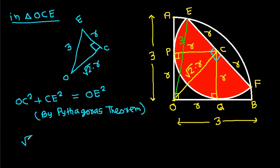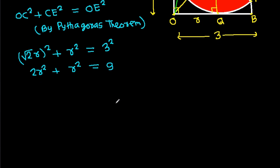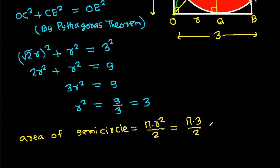So (√2·R)² + R² = 3², giving 2R² + R² = 9, so 3R² = 9, therefore R² = 3. The area of the semicircle is π·R²/2 = π·3/2 = 3π/2.